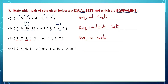Next one: I have different elements in both sets, can you see? But let me count the number of elements: 1, 2, 3, 4, 5 — I have 5 elements here. And 1, 2, 3, 4, 5 — 5 elements here as well. Since the number of elements is the same, they are called equivalent sets.